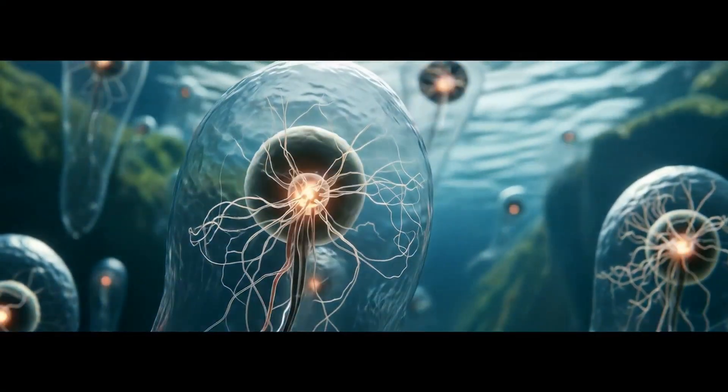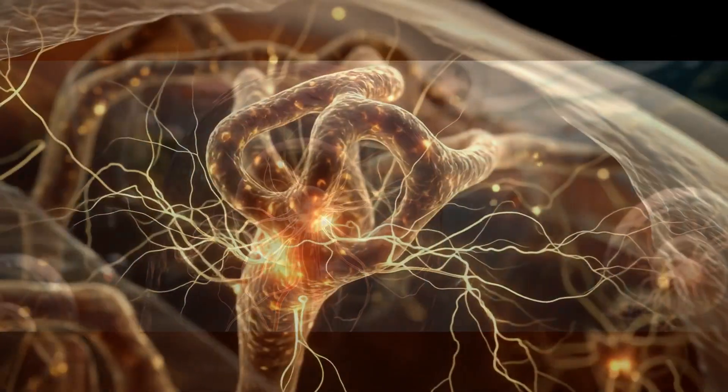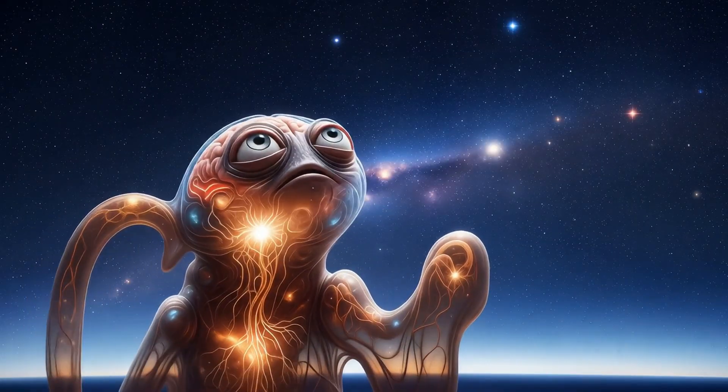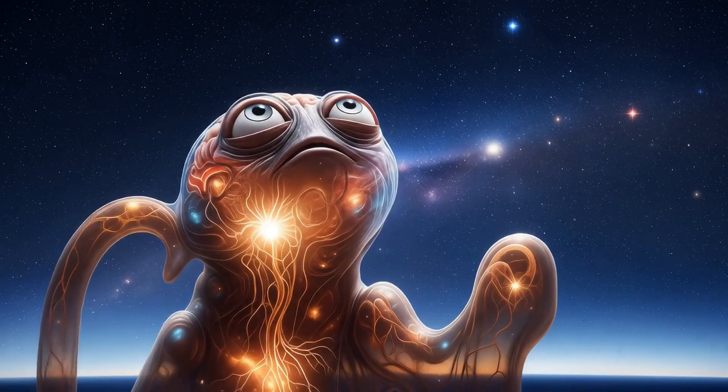Nervous systems emerge. Brains mirror the world with patterns that can be stored, recalled and recombined. Thought sharpens, meaning deepens. A creature looks up and remembers the stars.